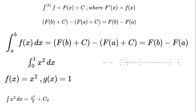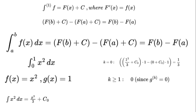For k equals 0: 1 cubed over 3 plus c₀ times 1 minus (0 plus c₀) times 1 equals 1 over 3. For k greater than or equal to 1: 0, since g to the power of k equals 0. The integral from 0 to 1 of x squared dx equals 1 over 3. Check: the integral from 0 to 1 of x squared dx equals x cubed over 3 evaluated from 0 to 1 equals 1 over 3. It works, and the constants canceled out beautifully.